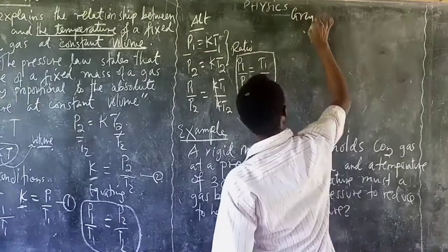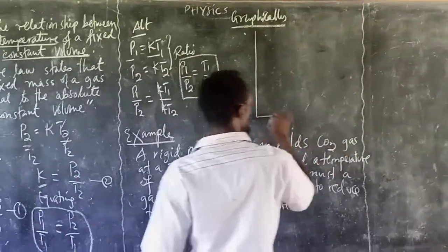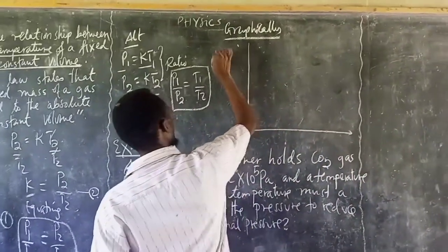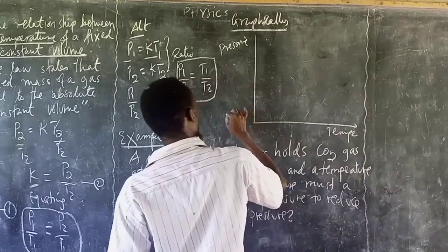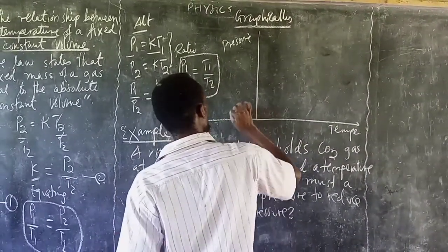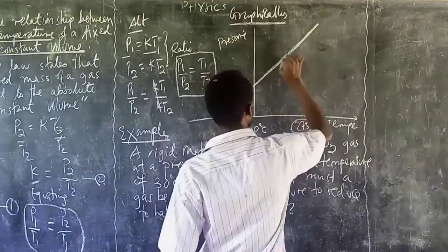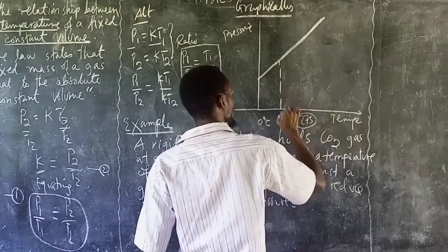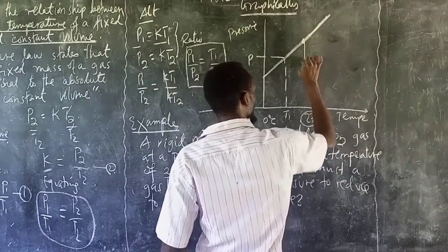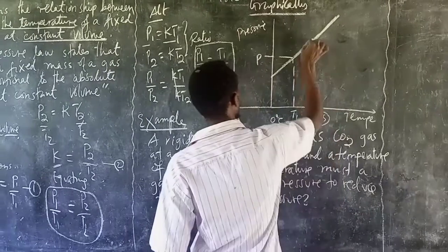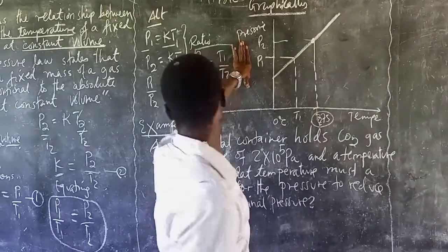Graphically, this can be represented as follows: if the y-axis is pressure and the x-axis is temperature, the graph will show a direct proportion — a straight line. If the temperature was at a certain point, the pressure was at a corresponding point. As you increase temperature, pressure increases. This confirms what we call the pressure law: pressure is directly proportional to temperature.